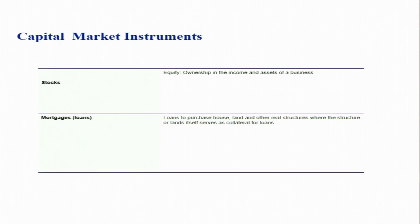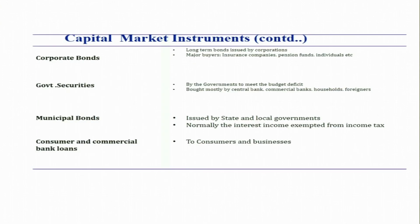Let us now look at capital market instruments. Equity or stocks means ownership in the income and assets of a business. Mortgage loans are loans to purchase houses, land, or other real structures, where the property itself serves as collateral. Corporate bonds are long-term bonds issued by corporations; major buyers are insurance companies, pension funds, and individuals.